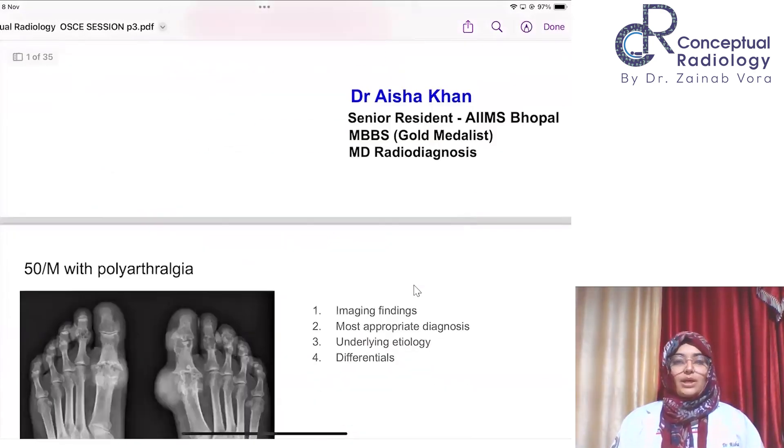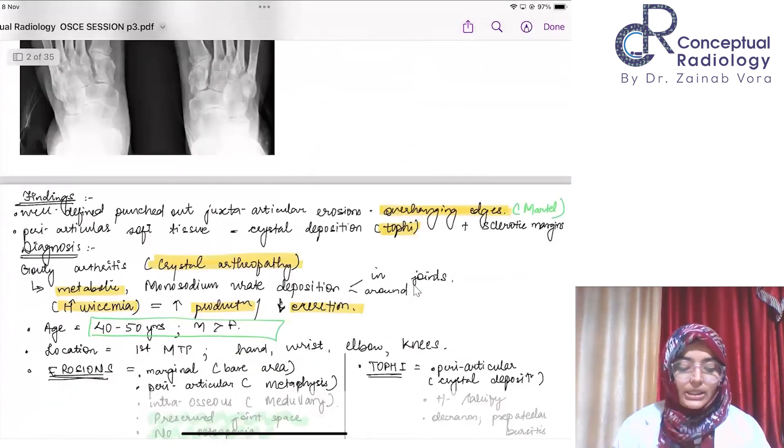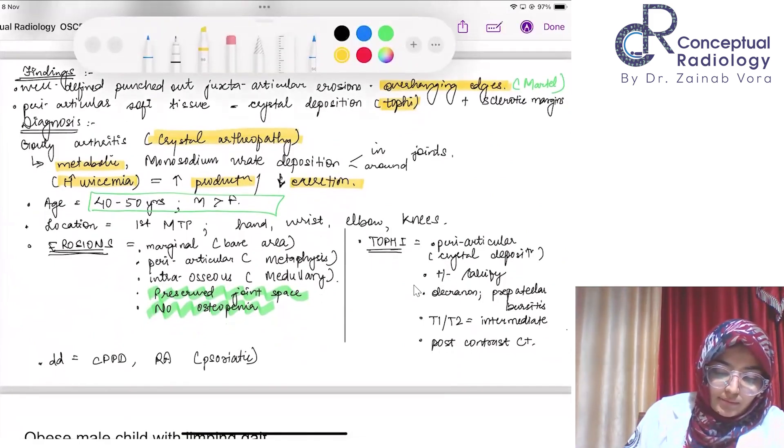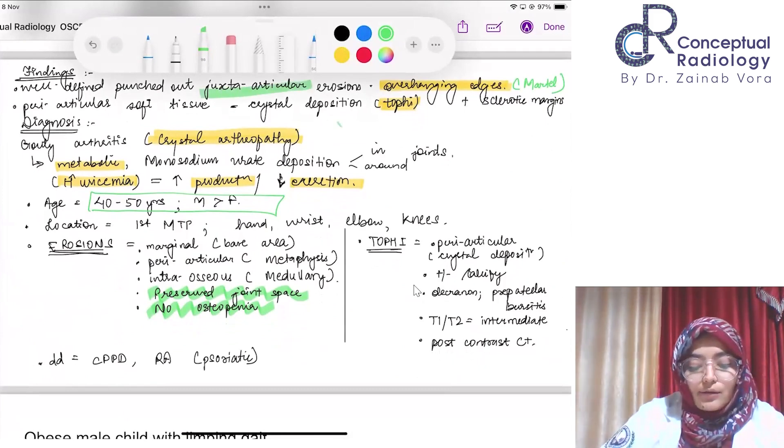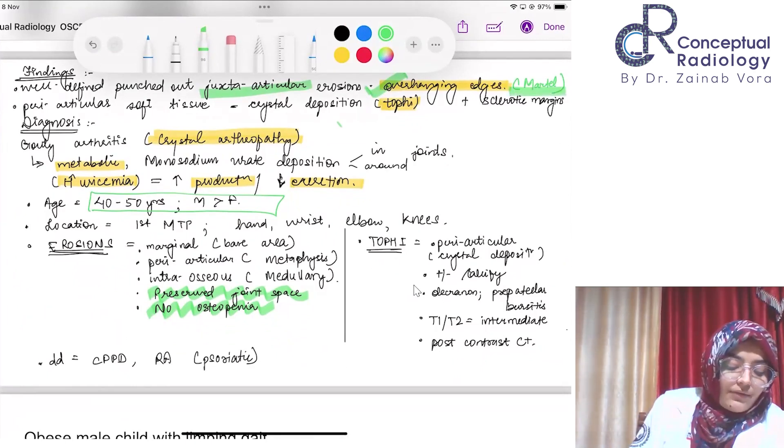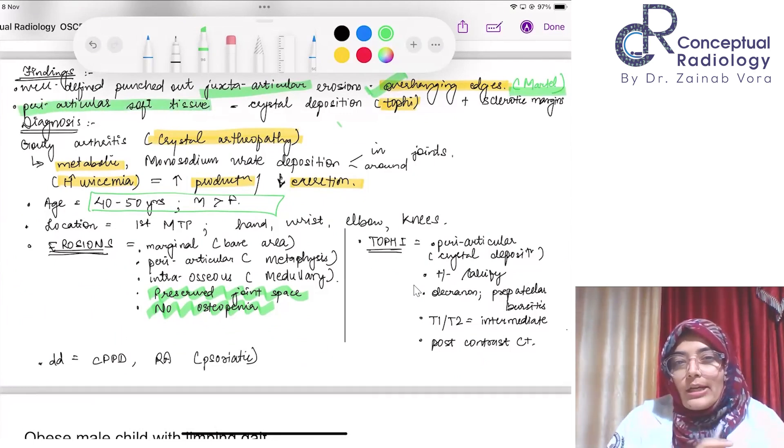Findings: these are well-defined punched-out juxta-articular erosions. We need to remember these are going to be juxta-articular and may also involve the bare areas, like in rheumatoid arthritis where cartilage is deficient. Periarticular and juxta-articular erosions with overhanging edges because there is some reactive new bone formation happening at the edges. This is the famous Martel sign, which was a PG question also.